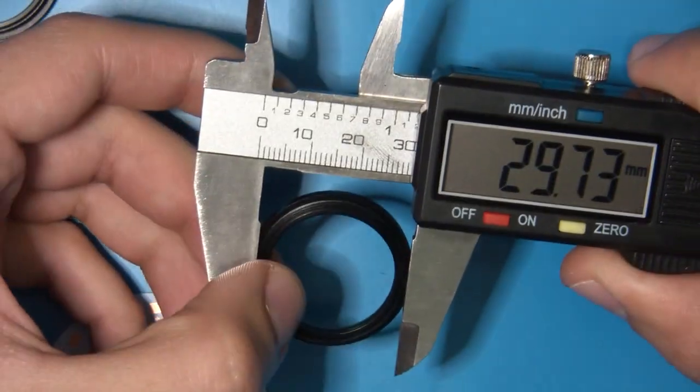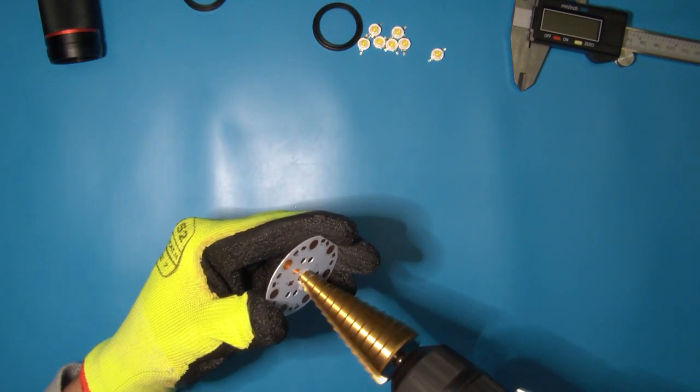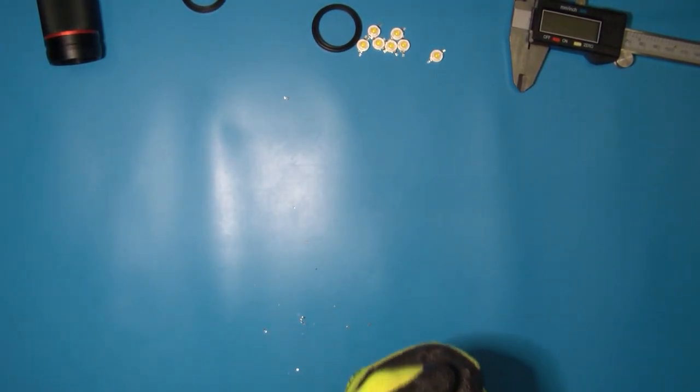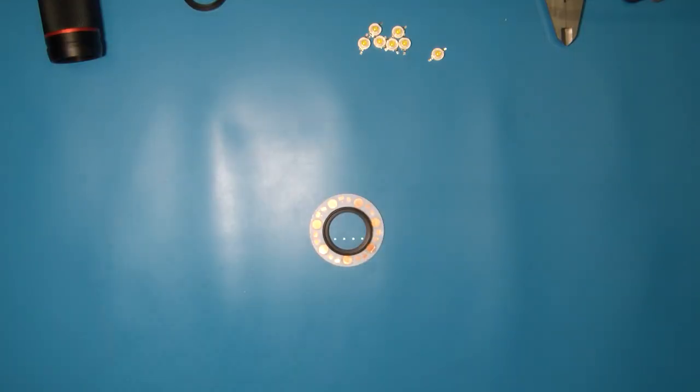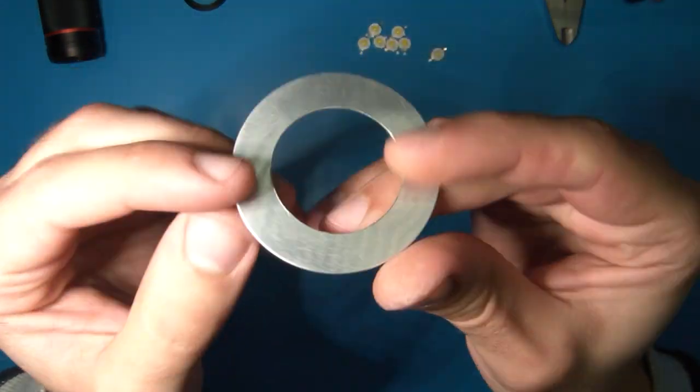I then grab my step drill and enlarge the hole. If you do this, I recommend using a hole saw instead if you have one, and secure the PCB to a vise. Next I checked if everything would work as planned, and it seemed possible, great!